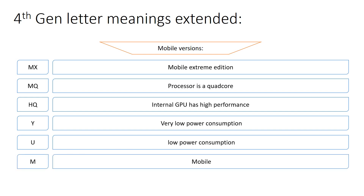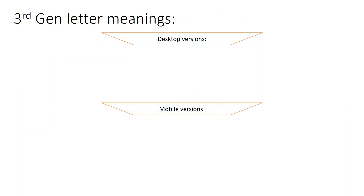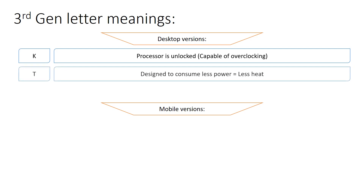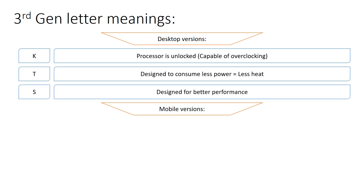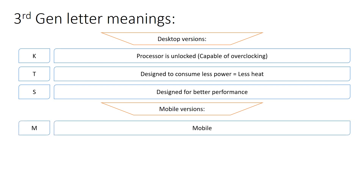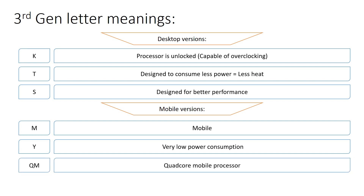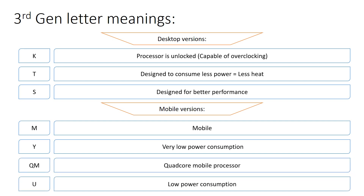M stands for mobile. Now onto the 3rd generation desktop versions: K means the processor is unlocked and capable of overclocking, T means designed for less power and less heat, and S is designed for better performance. For the mobile version: M stands for mobile, Y stands for very low power consumption, QM stands for quad core mobile processor, and U stands for low power consumption.